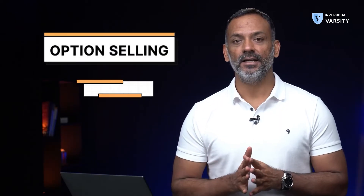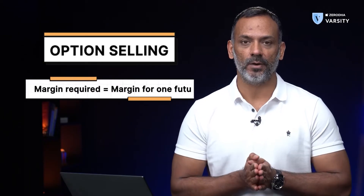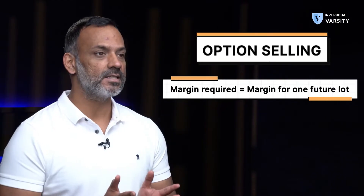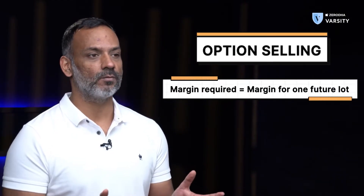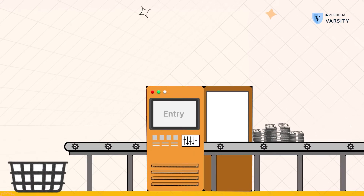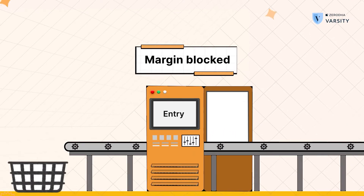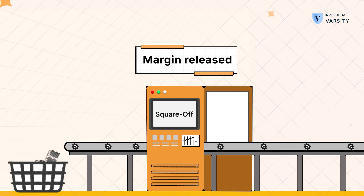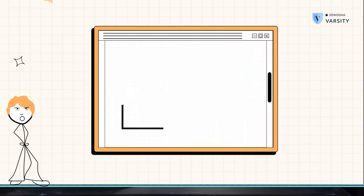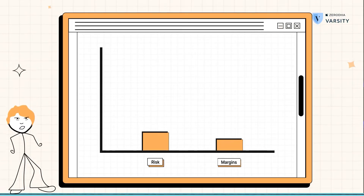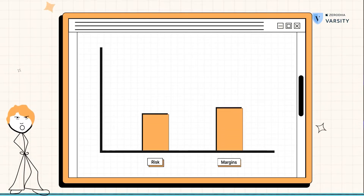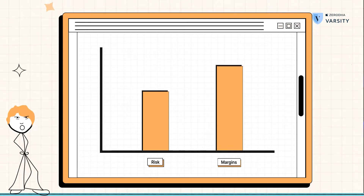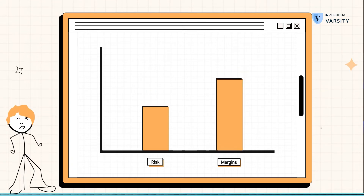Options selling, on the other hand, requires a margin deposit from your end. The margins work just like the way the margins work for futures. Of course, there is no concept of mark-to-market in options. Margins are blocked at the time you sell an option and released when you square off your position. The margin charged is a function of risk — higher the risk, higher the margin charged; lower the risk, lower the margin charged.